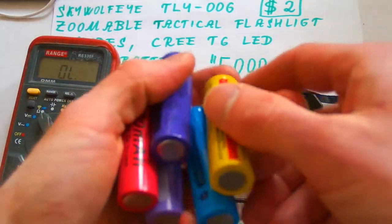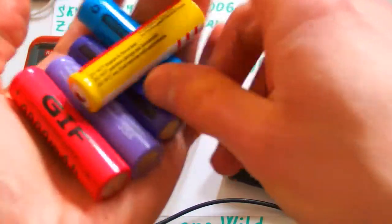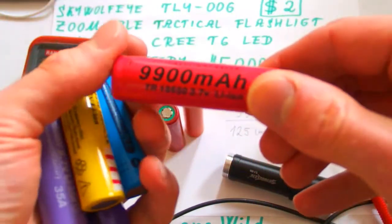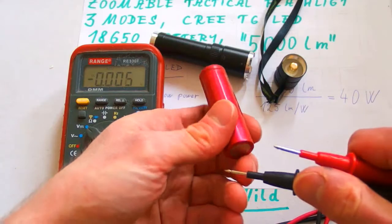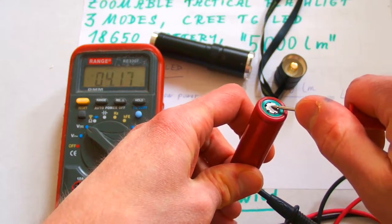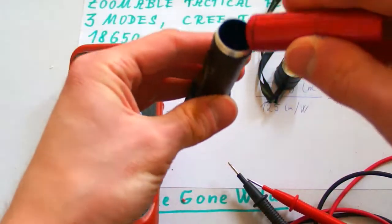And of course don't buy the cheap eBay Chinese fake batteries because the real capacity is about 500 mAh. Let's have a fresh lithium battery. It's almost 4.2 volts. Let's put it in.